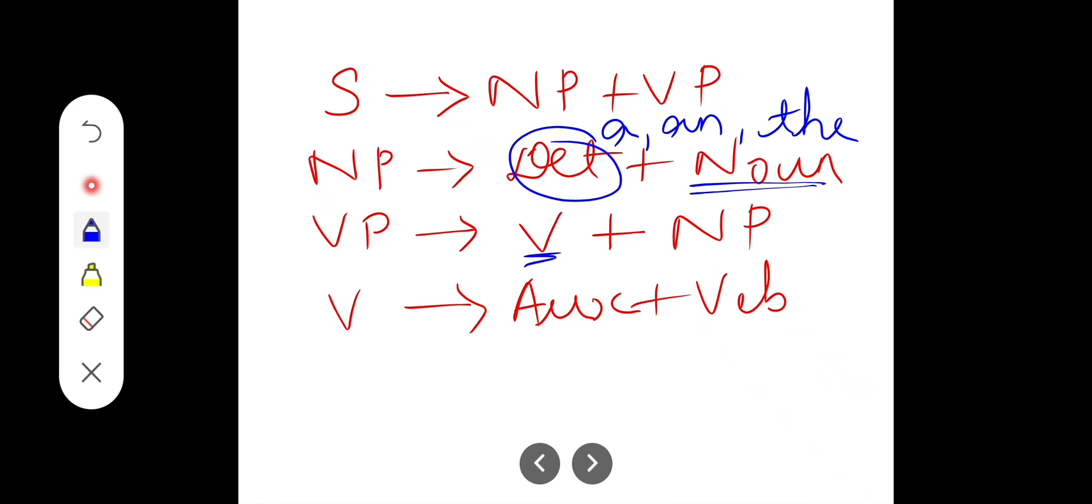Verb means it's an action word. And noun phrase is nothing but determiner and noun. Sentence is noun phrase along with the verb phrase. That is noun phrase plus verb phrase. And verb means auxiliary verb and verb.